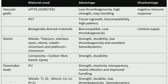For vascular grafts, PTFE is used — low thrombosis, high strength. Disadvantages include immune response. PET has tissue ingrowth but biocompatibility is a problem. Biologically derived material is very good but has limited supply. For stents, many metals are used — originally titanium, then stainless steel, nitinol, cobalt-chromium.